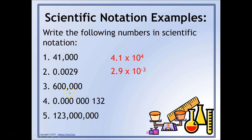In the number 600,000, the decimal point is at the end, and we're going to move it five places to the left. So this will be 6 times ten to the fifth.